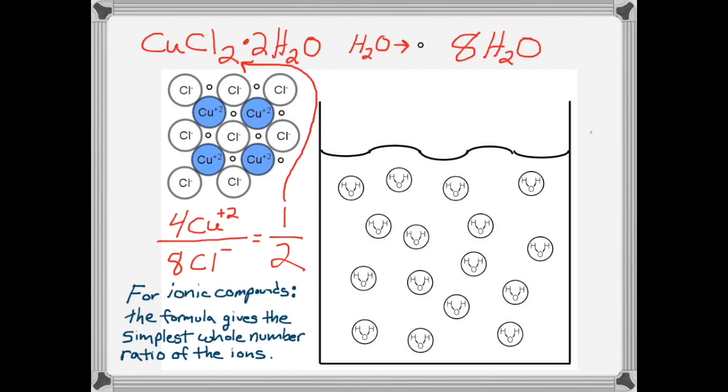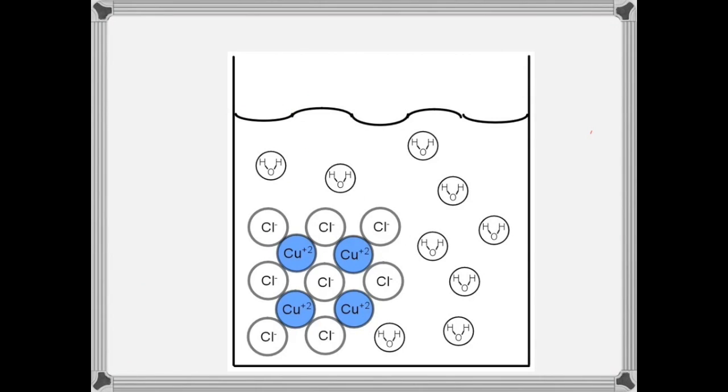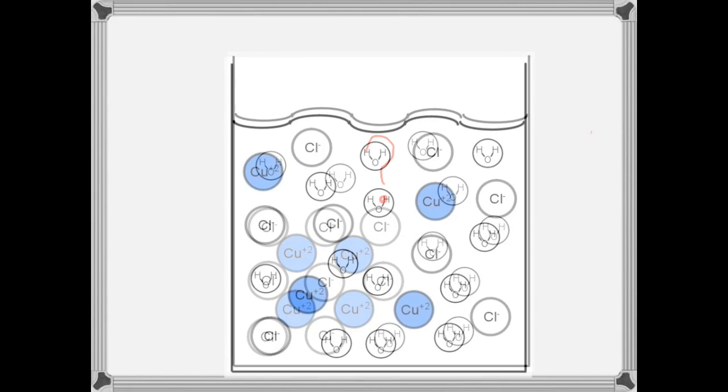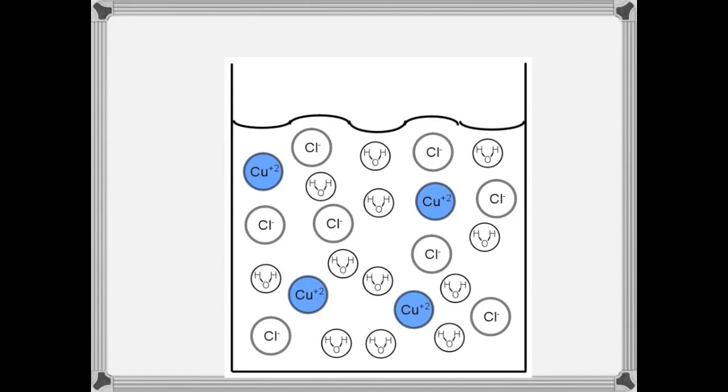And now we'll put the copper chloride dihydrate into the water. So what's going to happen? The copper chloride dissolves in the water. Now if copper chloride were a covalent molecule, what you'd end up with is a whole bunch of little molecules swimming around in the water. But in this case, we have an ionic compound. So what does that mean?